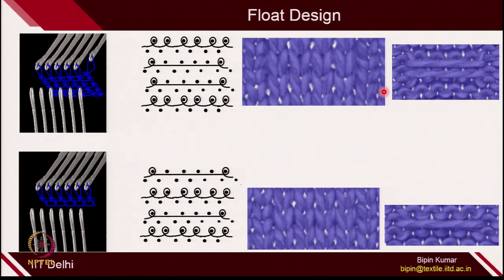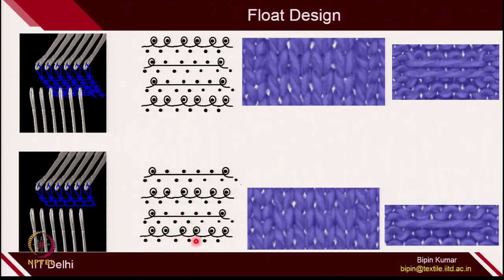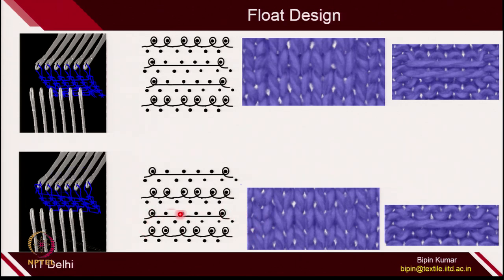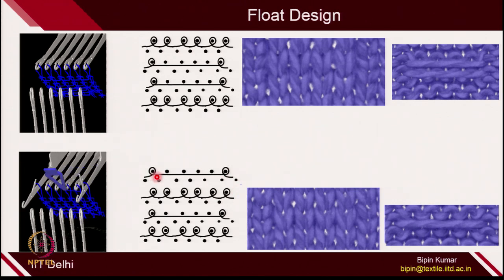Now let's move to an alternating float pattern. Here alternating courses repeat: first course is loops, second course is float, third course is loops, fourth course is float. Because of that the fabric looks different. On the back side you can easily see 2 courses making float simultaneously in the first pattern, while here only 1 course is making float. The first course all are knitting; second course only 2 are knitting and 4 are resting; third course all are knitting; fourth course again 2 are knitting and 4 are resting. This is how the 2 float fabrics are different.